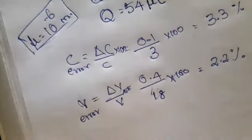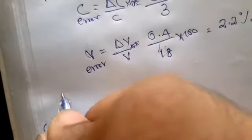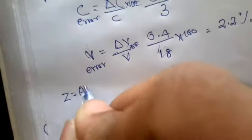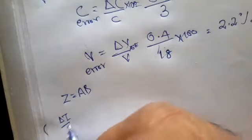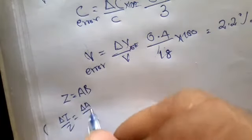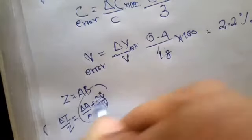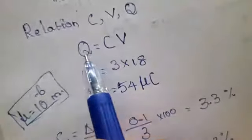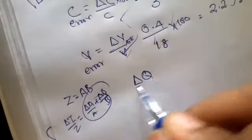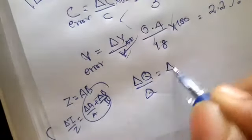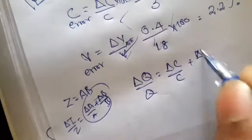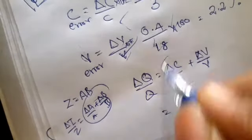This is error in C and V. What is error? If Z equals A times B, then how can we write delta Z by Z equals delta A by A plus delta B by B. This is in the form of Z equals A into B, so delta Q by Q equals delta C by C plus delta V by V.